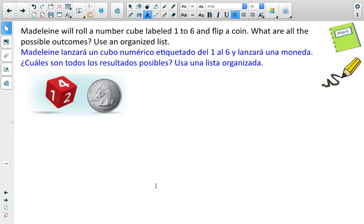Let's take a look at this one. Madeline will roll a number cube labeled 1 to 6 and flip a coin. What are all the possible outcomes? Use an organized list. So we're not going to use a tree diagram. We're just going to write out the possible answers.